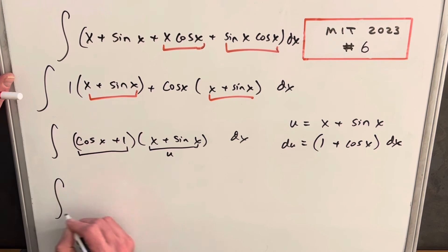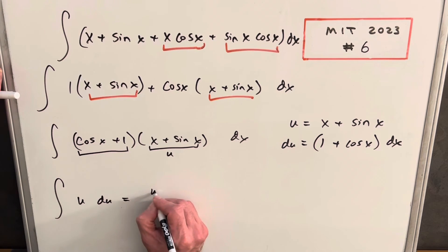So then making our substitution, we're just going to have u du, the simplest integral in the world, just about. So the integral of this is just going to be u squared over two plus c.